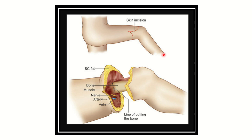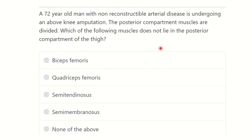Hi everyone, welcome to another question and answer session for the MRCS exam. Let's read the question: a 72-year-old man with non-reconstructible arterial disease is undergoing an above-knee amputation. The posterior compartment muscles are divided. Which of the following muscles does not lie in the posterior compartment of the thigh?